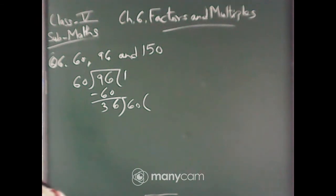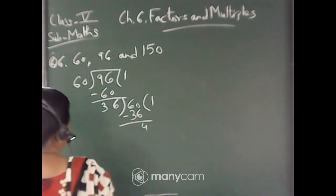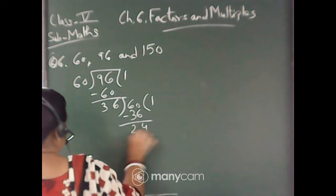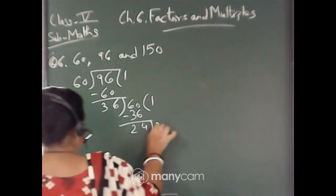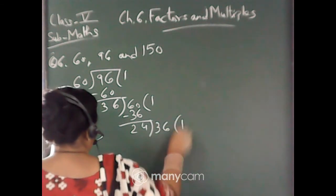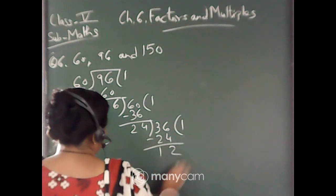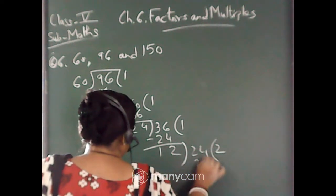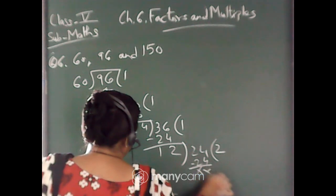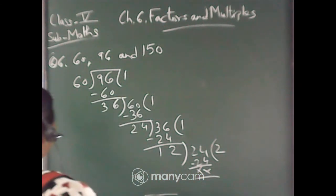Now this 60 will come down. So 2 times is more number, 1 times 60. 36 times 4 is 24. Again 36 will come down. 1 times 60, 24. Now this 24 will come down. 12 times 60. That means this 12 is the HCF of 60 and 96.